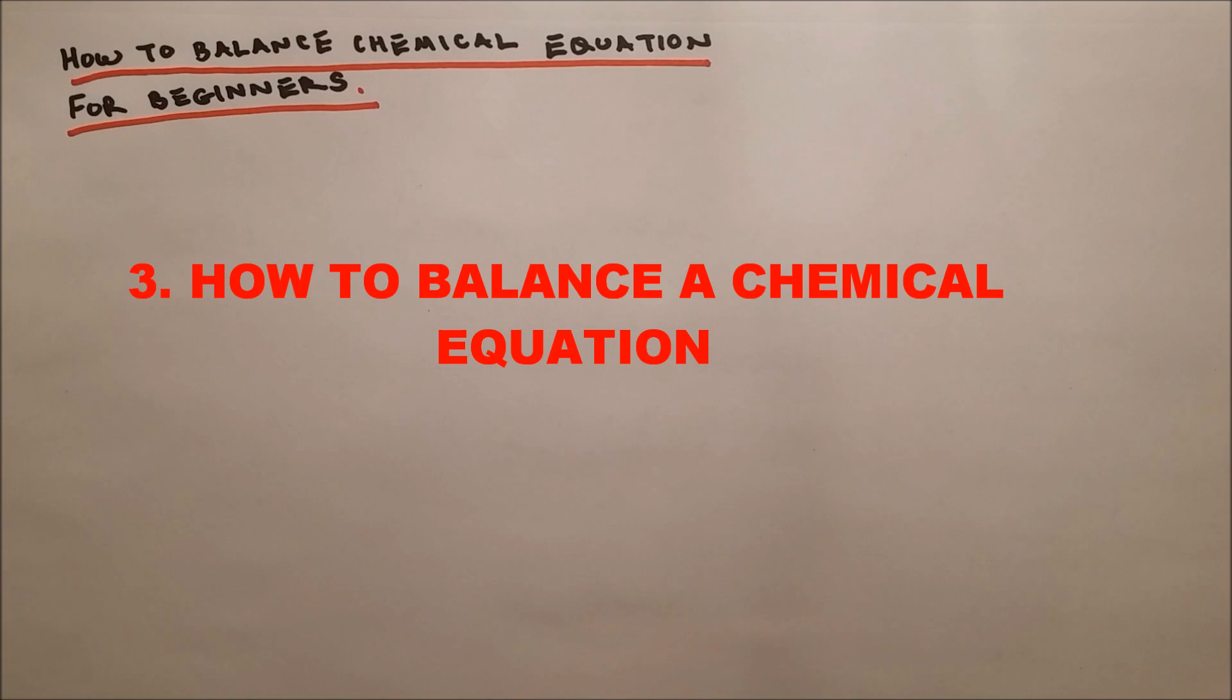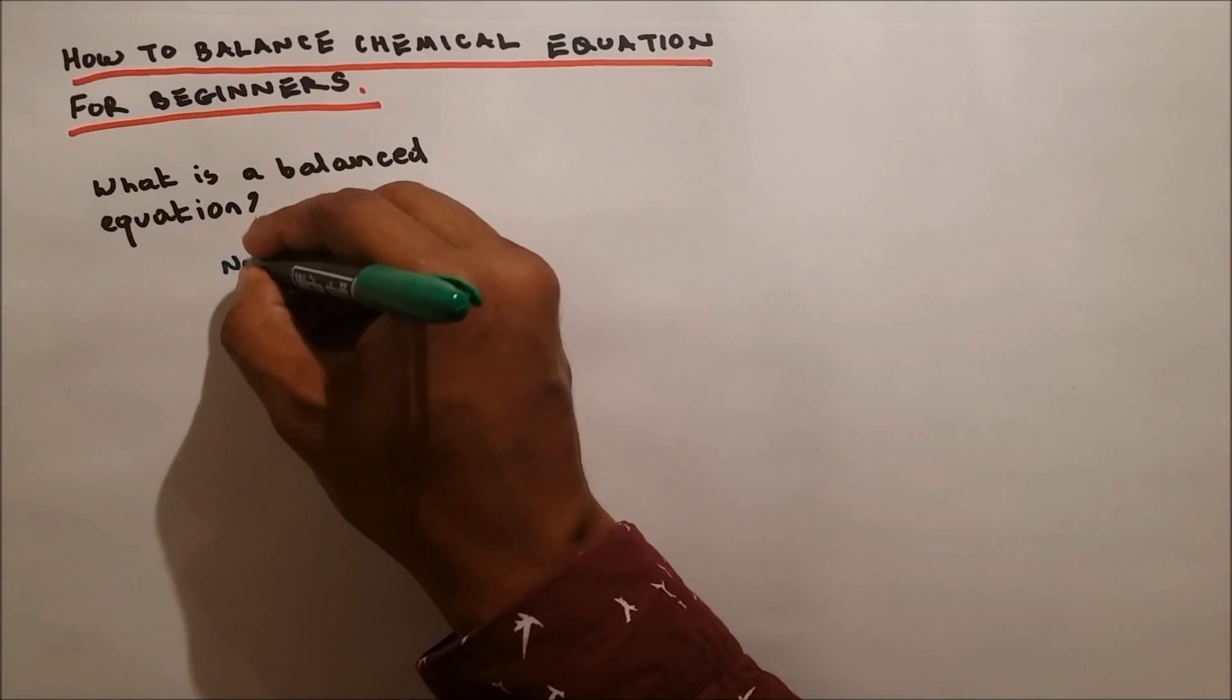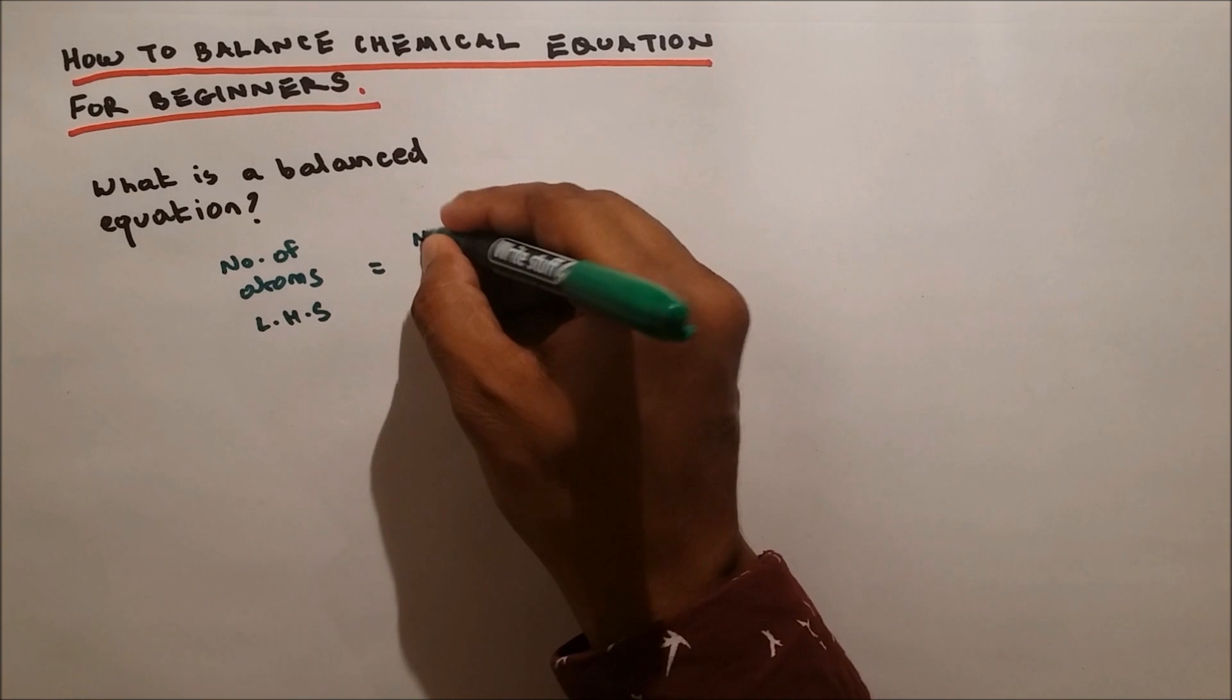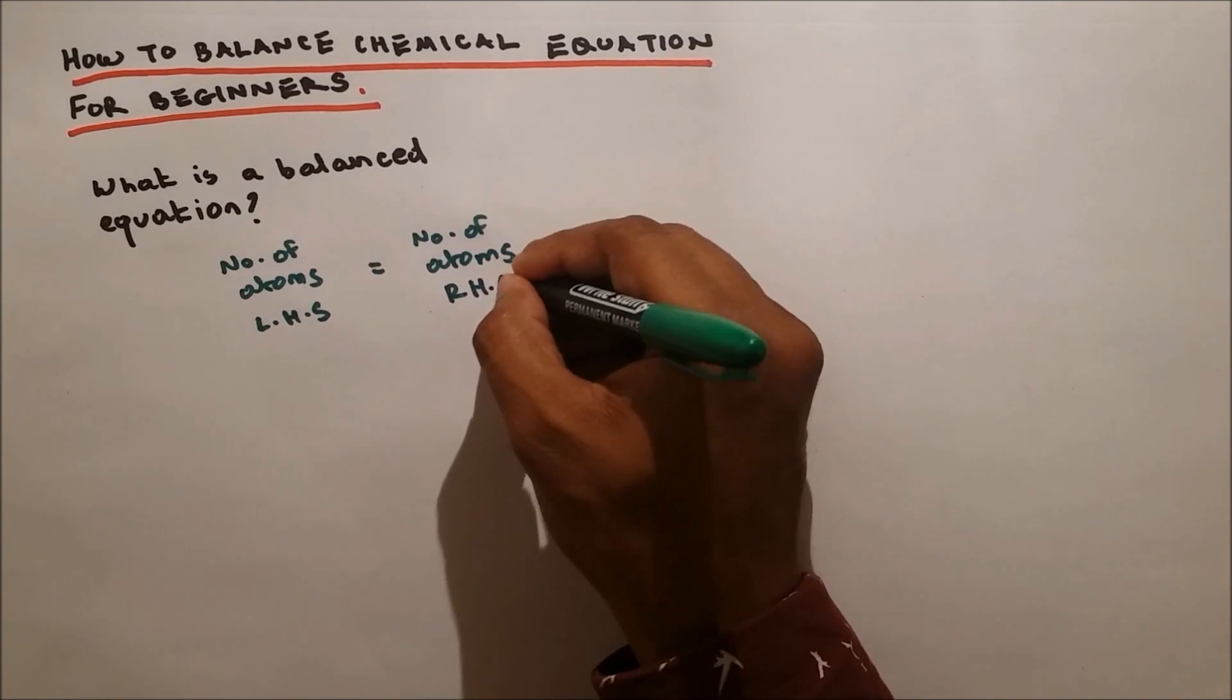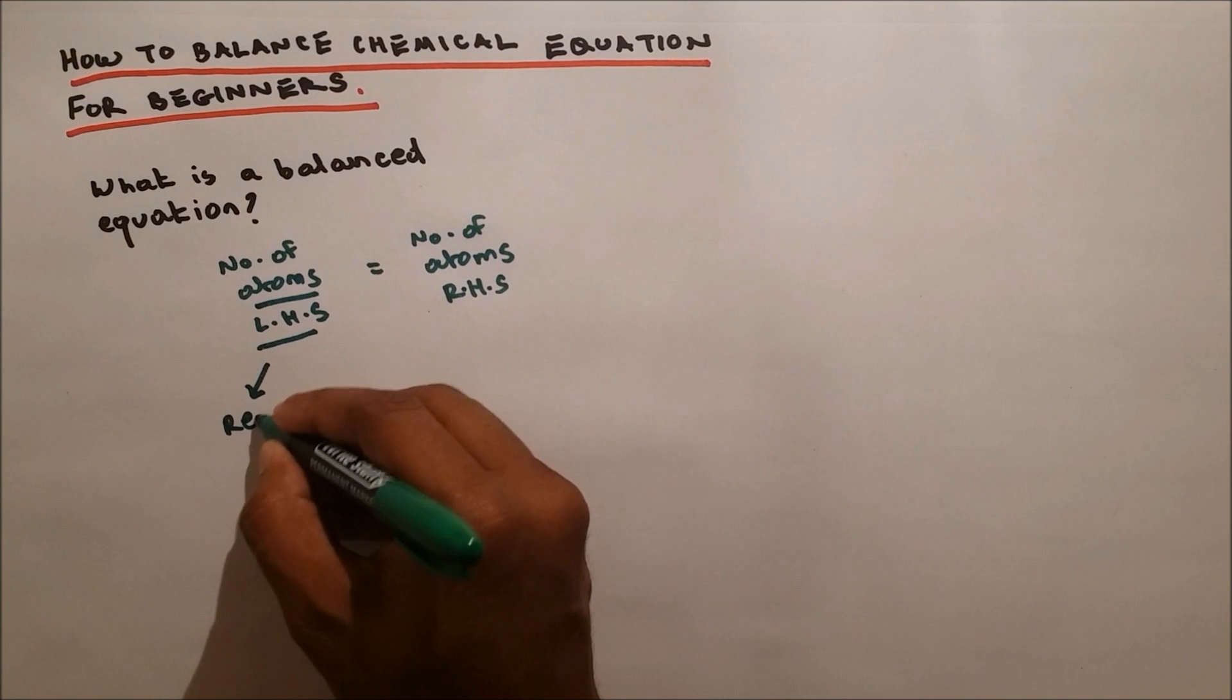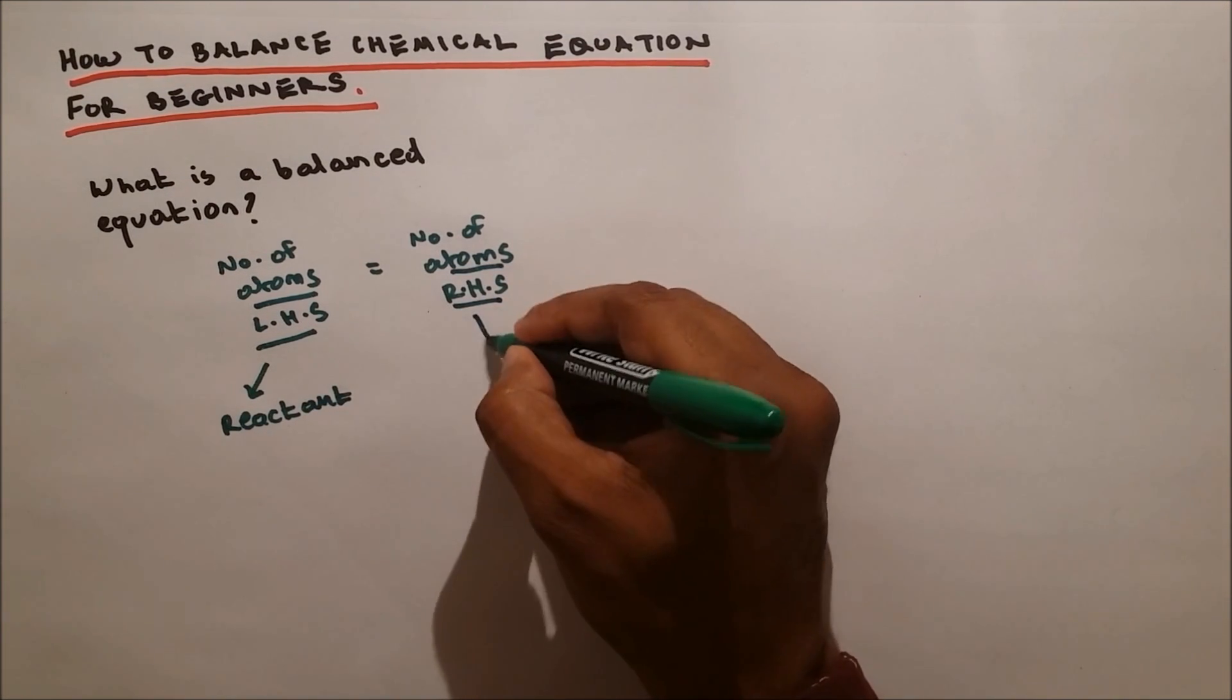A balanced chemical equation is when the number of atoms on the left-hand side is equal to the number of atoms on the right-hand side. The atoms on the left-hand side are called reactants, and the atoms on the right-hand side are called products.